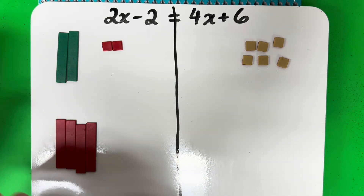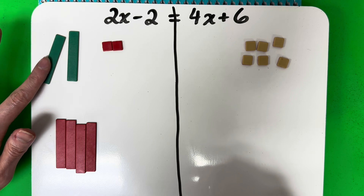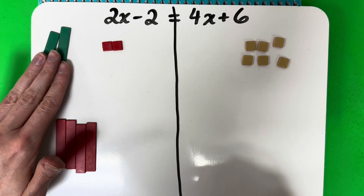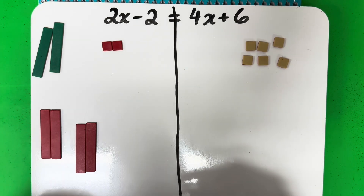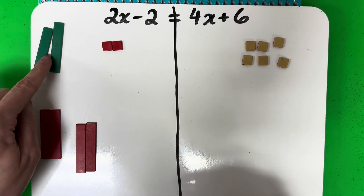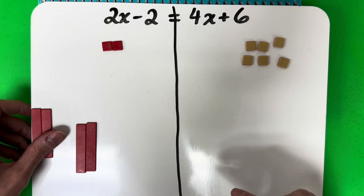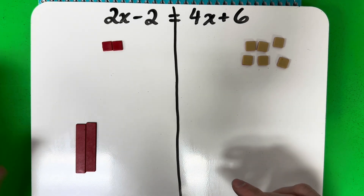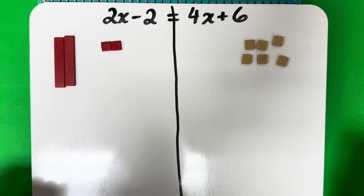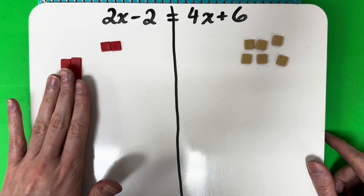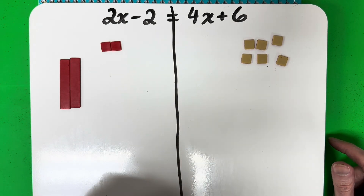And then also here I have some ones that cancel out. I have 2 positive and 2 negative — 2x minus 2x is 0. So I have two red rectangles on the left and none on the right. This is great. Now my goal is I want all of my squares on the right side, so these two need to move to the other side.